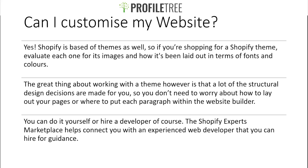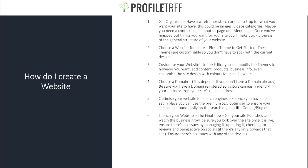So how do you go about creating a website? First, get your base organized — have a wireframe, sketch, or plan for what you want your site to have. It could be images, video, categories, a contact page, an about us page, or a menu page. Once you've mapped things out, you'll make quick progress on the general structure for your website.